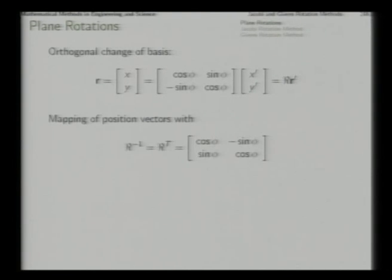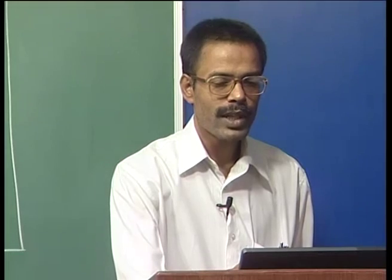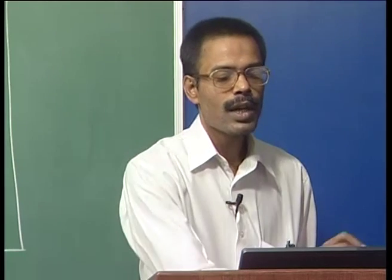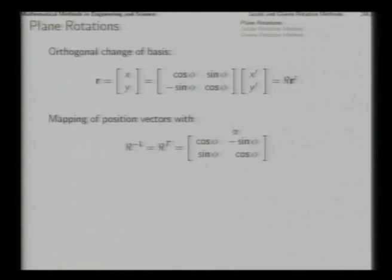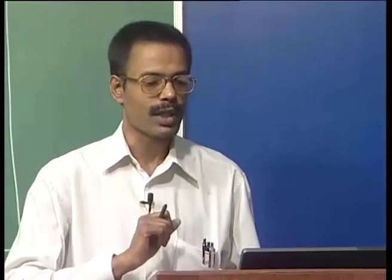When we want to find the new position vector in terms of the old, we need r-prime equals R-inverse times r, and R-inverse is the same as R-transpose. So this matrix finally gives us the mapping from the old coordinates to the new coordinates.